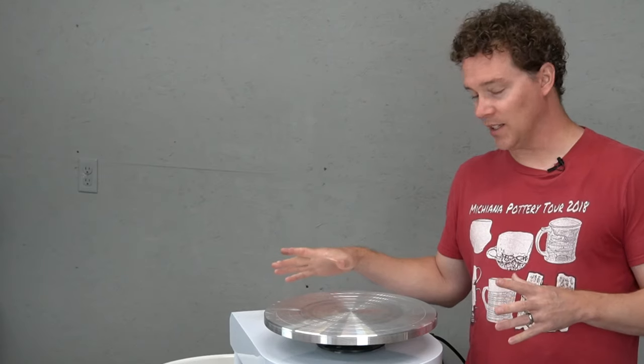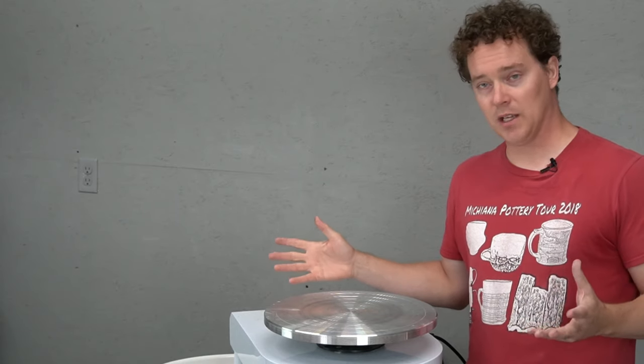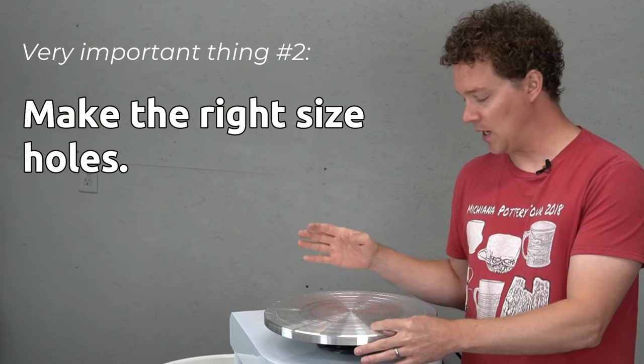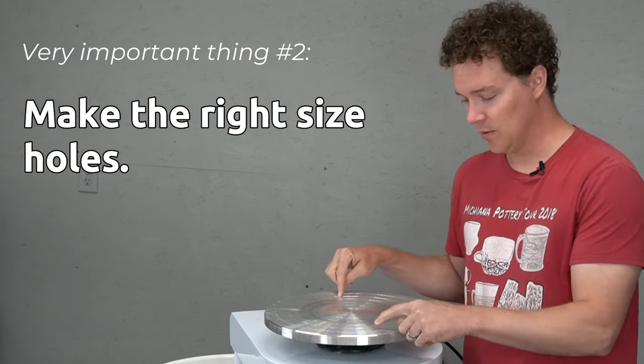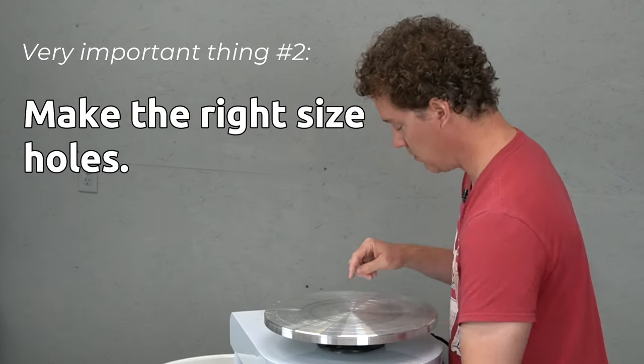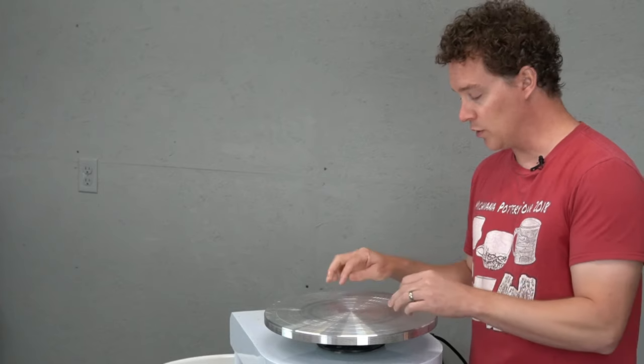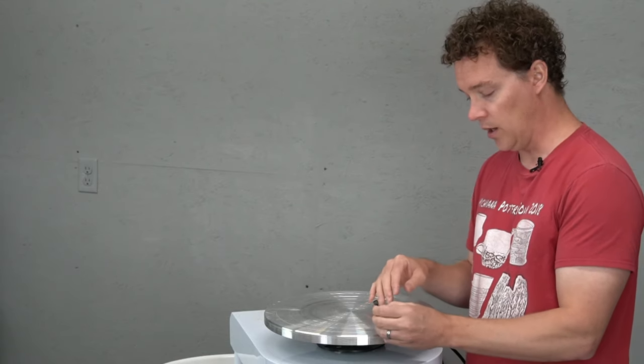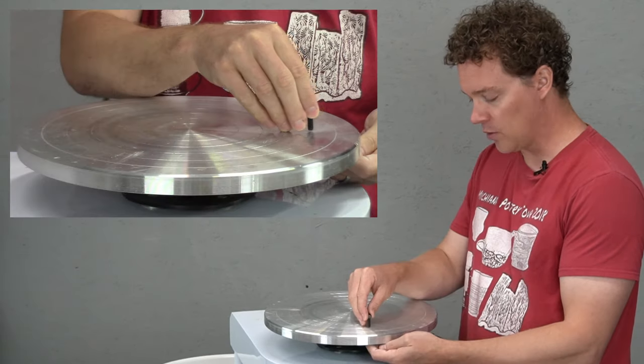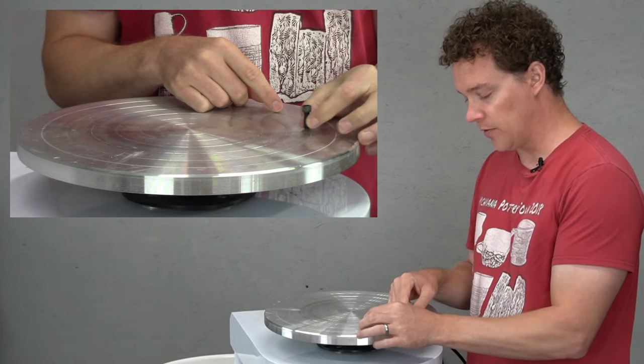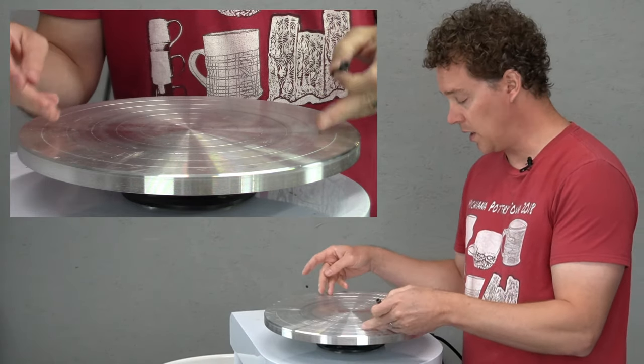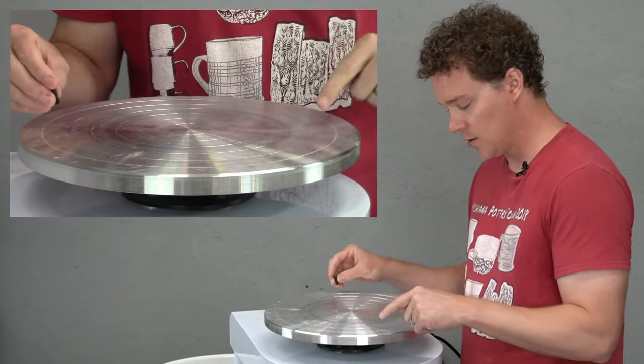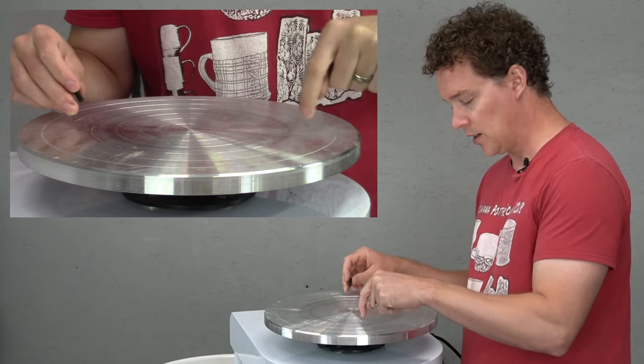The second most important part, maybe equally as important as getting the right distance from pin to pin, is to make the right hole in your wheel head. Because if your hole is too small, of course your bat pins won't go down there. If your hole is too big though, your bat pins might wiggle a little bit. Now you can screw them down with the wing nuts, but if the hole is too big when you tighten them down they might be off in one direction or another a little bit, which would make your bat not fit very well.